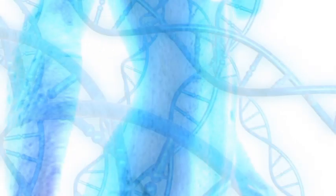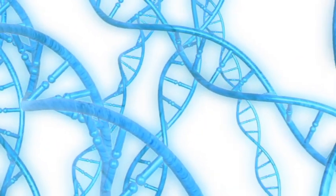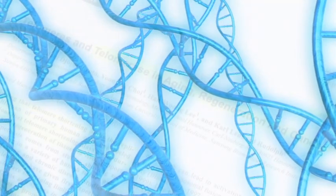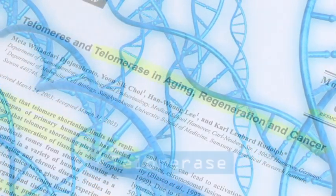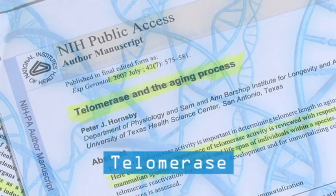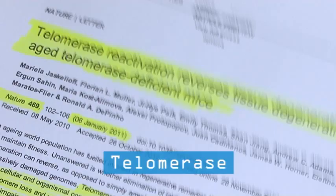For example, promising research has suggested that the natural ageing process can be slowed or even reversed using an enzyme called telomerase that protects the tips of the chromosomes in our DNA.